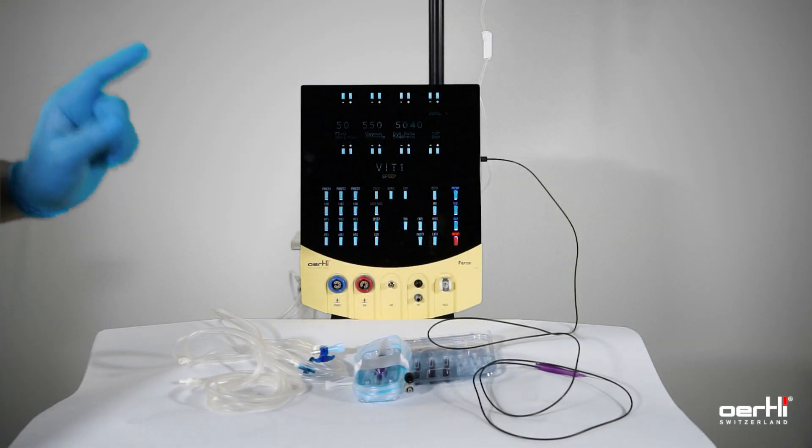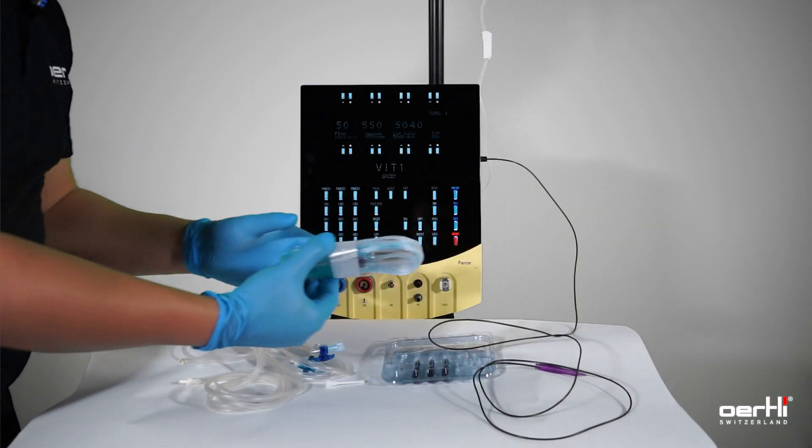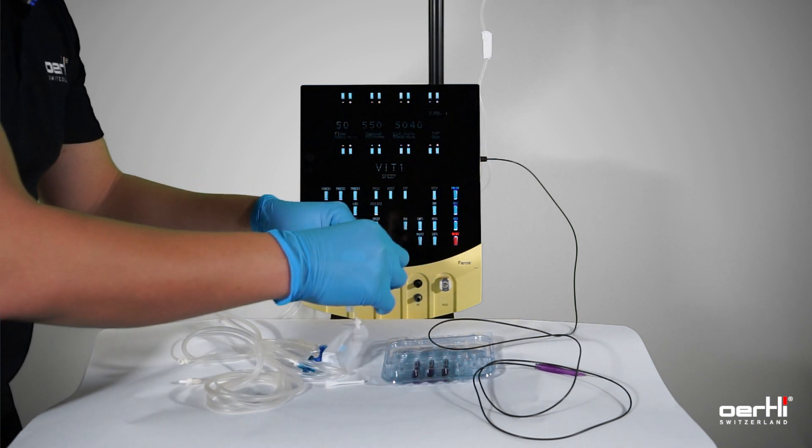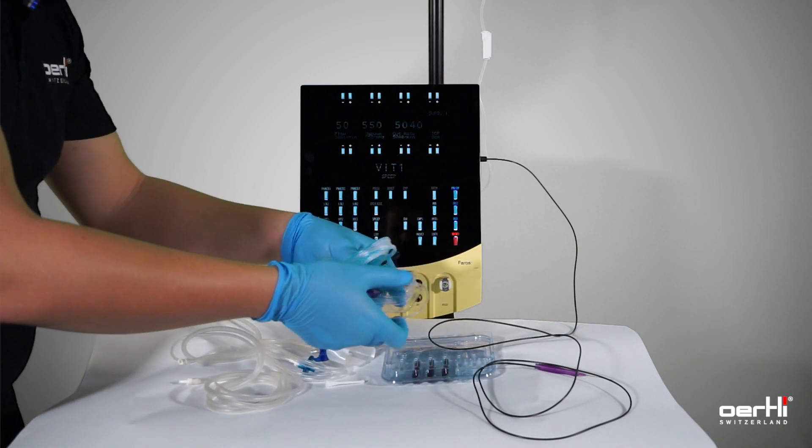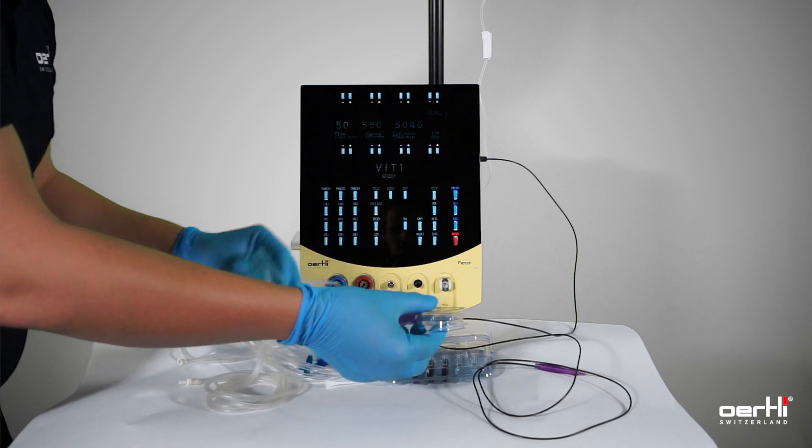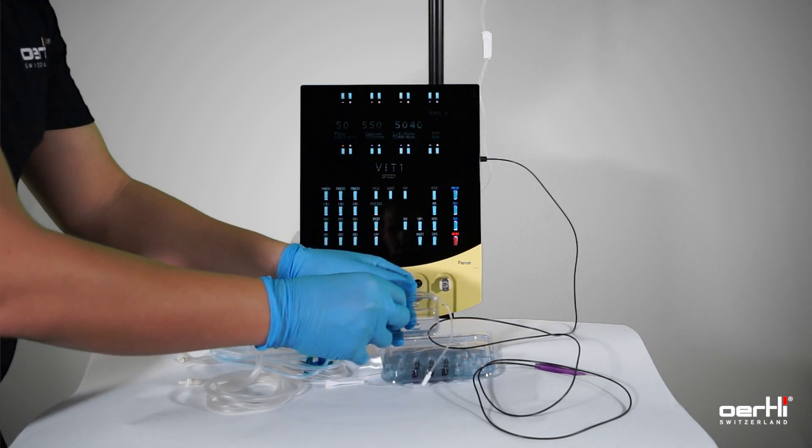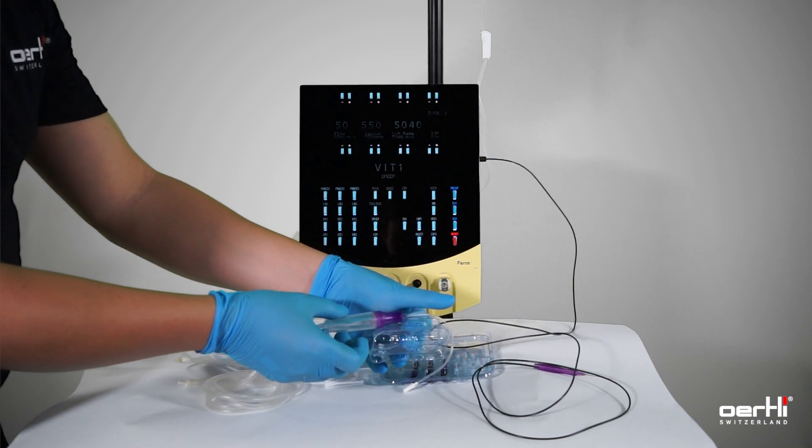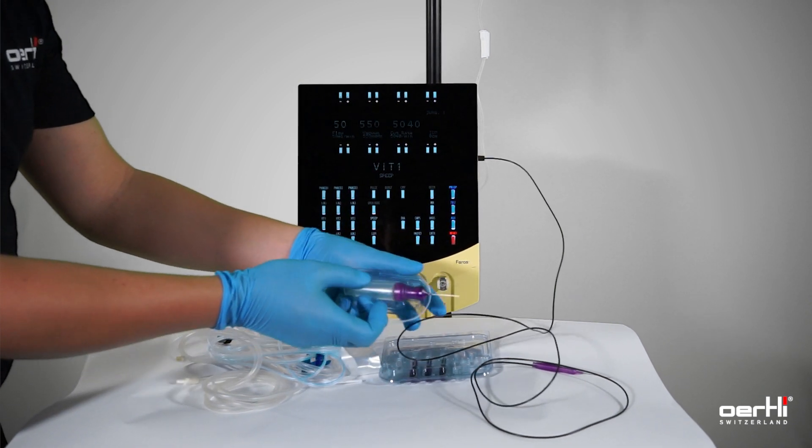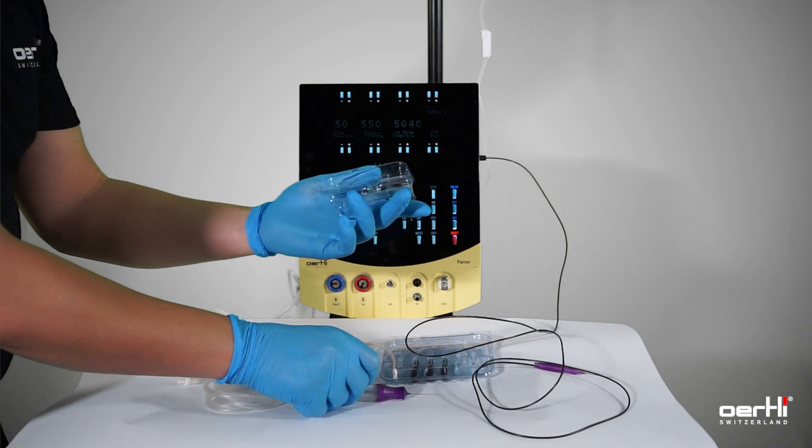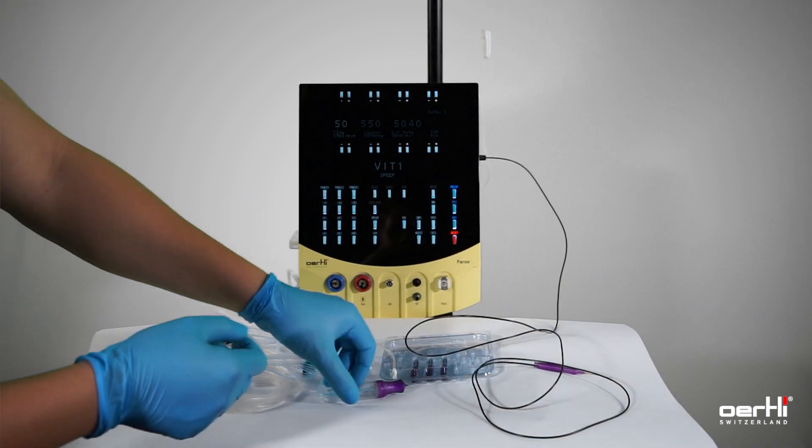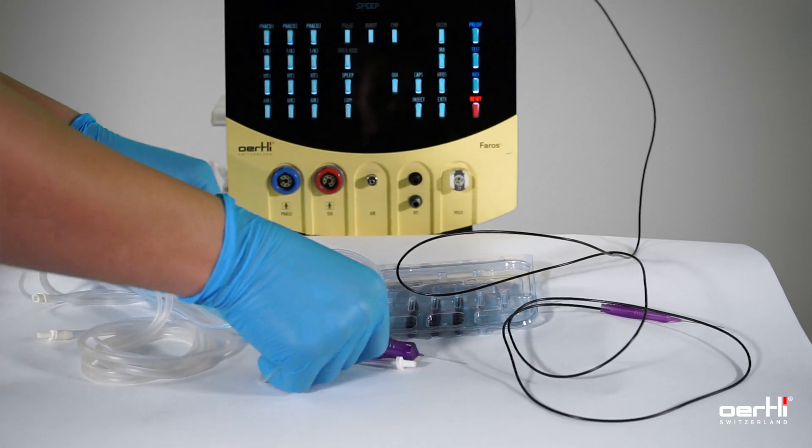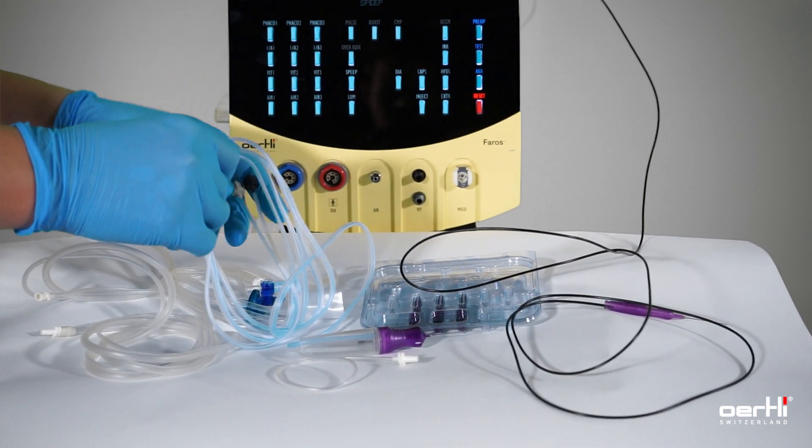Next, the cutter. Remove the wrap, take the handpiece out of its cover. Be careful, don't bend or damage the cannula. Scrap the plastic and connect the cutter.